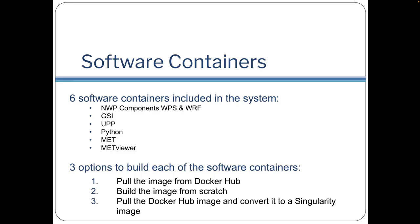Each of these containers can be built using three different options: first, pulling the image from Docker Hub; second, building the image from scratch with Docker; or third, pulling the Docker Hub image to convert it to a Singularity image for use with Singularity commands.